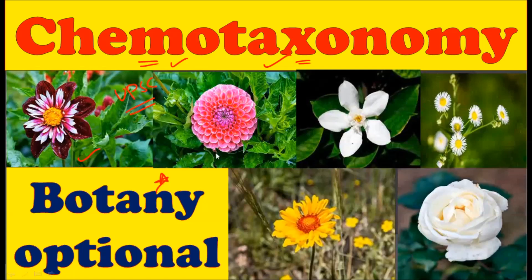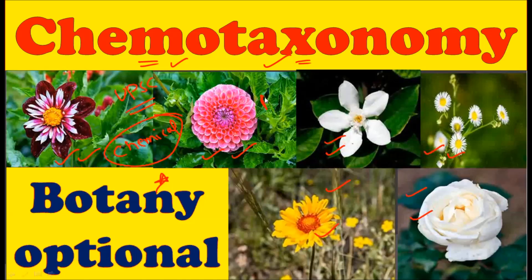I am intentionally showing these photographs on this slide because you should generally have the idea that each particular plant has a different chemical composition. Every plant has a different chemical composition and we can observe it externally as well. You can find flowers of different plants which are of different colors — they are made up of different phytochemical pigments. So we can use these chemicals in taxonomy to classify the plants. That is why chemotaxonomy is a very emerging science in the plant kingdom.